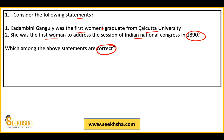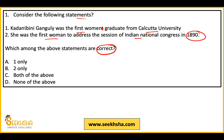Kadambini Ganguli was the first woman graduate — you will know that she was the first woman graduate from Calcutta University. The first statement is correct. The second statement is also correct — she addressed the Indian National Congress session, and the year 1890 is also important. So the answer in this case will be option C.